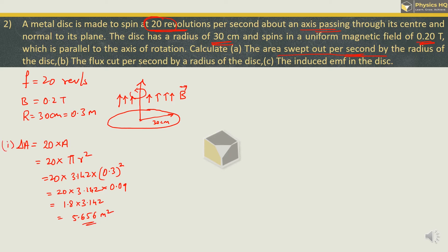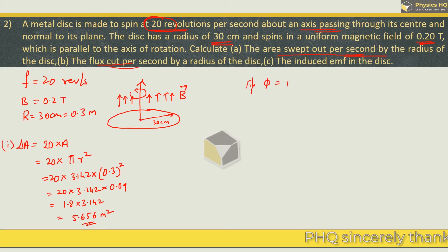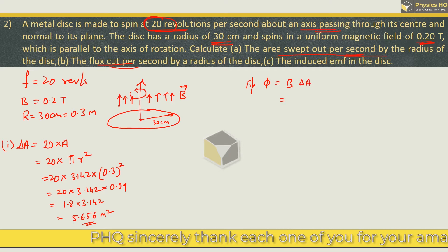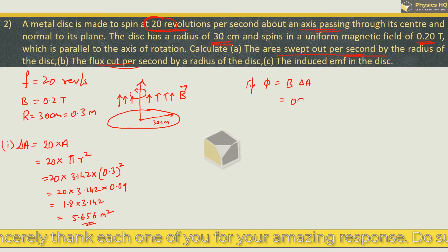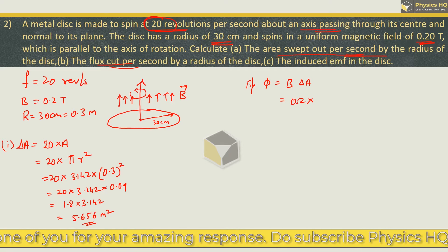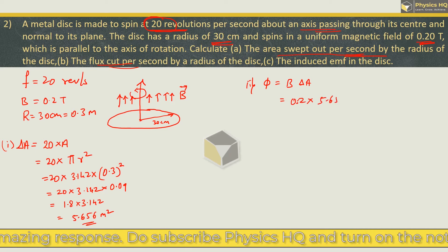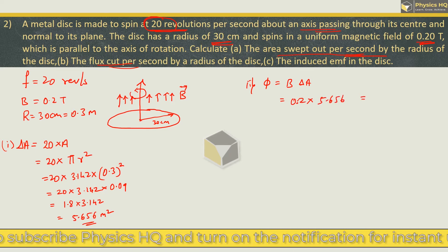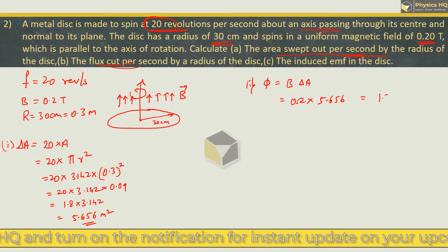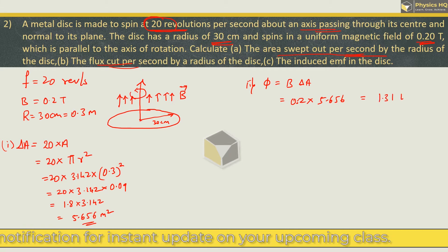So this was the first point. Second, they have asked what is the flux cut per second. Now flux is given by B into the area swept total area. B is given as 0.2 and area swept we got as 5.656. This will give us the value as approximately 1.31 Weber.